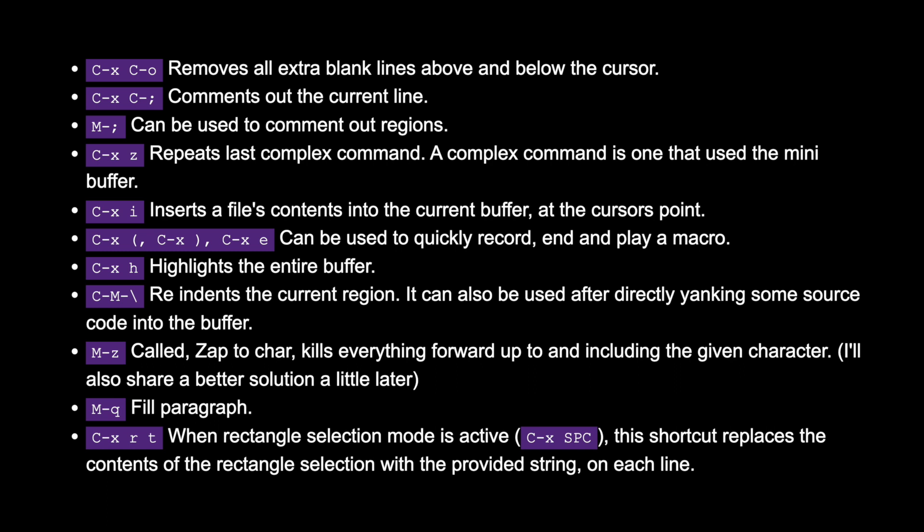Ctrl+X Z repeats the last complex command — a complex command is one that used the mini-buffer. Ctrl+X I inserts a file's contents into the current buffer at the cursor point. Ctrl+X (, Ctrl+X ), and Ctrl+X E can be used to quickly record, end, and play a macro. Ctrl+X H highlights the entire buffer. Ctrl+Meta+\ re-indents the current region and can be used directly after yanking source code into the buffer. Meta+Z (zap-to-char) kills everything forward up to and including the given character. Meta+Q fills the paragraph. Ctrl+X R T, when rectangle selection mode is active, replaces the contents of the rectangular selection with the provided string on each line.